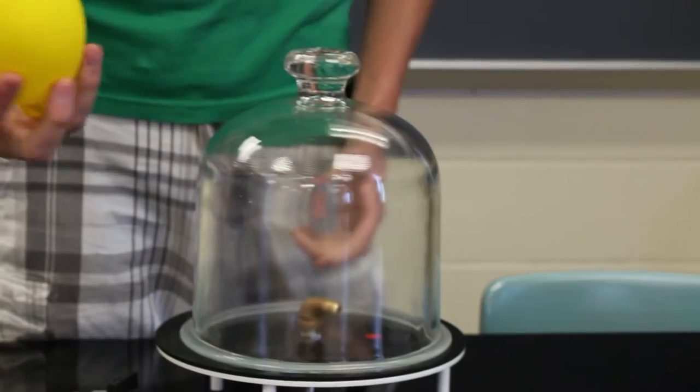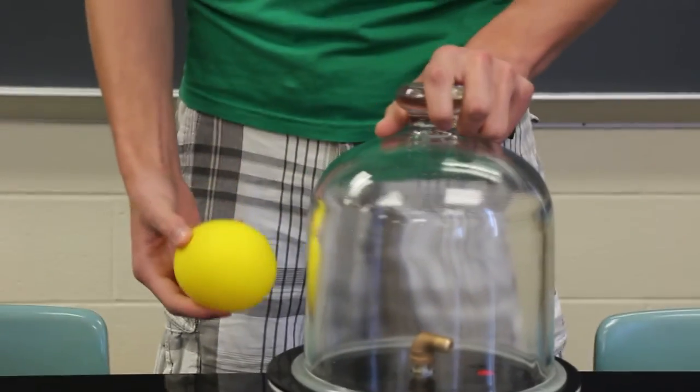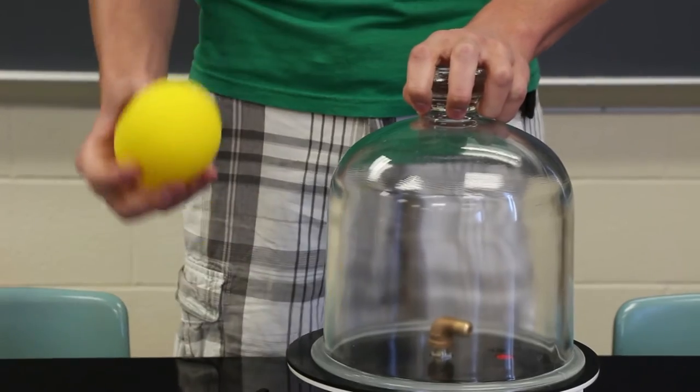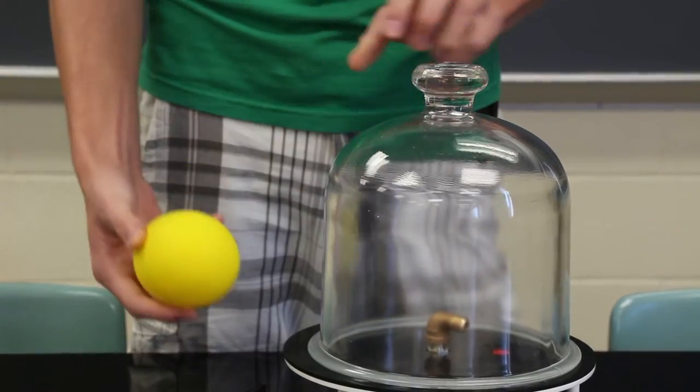Now what we're going to be doing is we're going to be putting a balloon into the vacuum chamber, turning it on, and watching what happens to it under low pressure, just like our high altitude balloons do when they're up in the upper atmosphere.